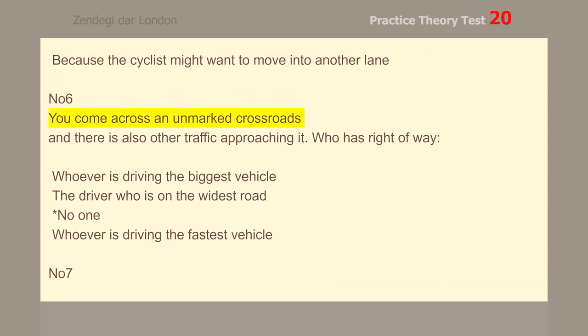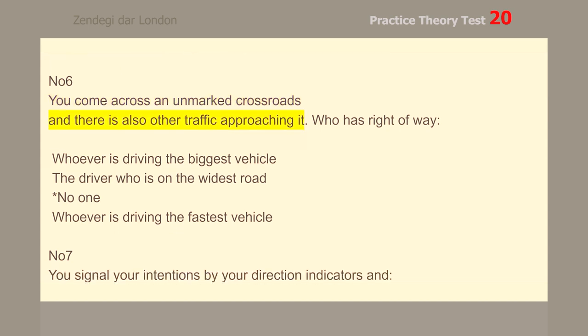Number 6. You come across an unmarked crossroads and there is also other traffic approaching it. Who has right of way? No one.